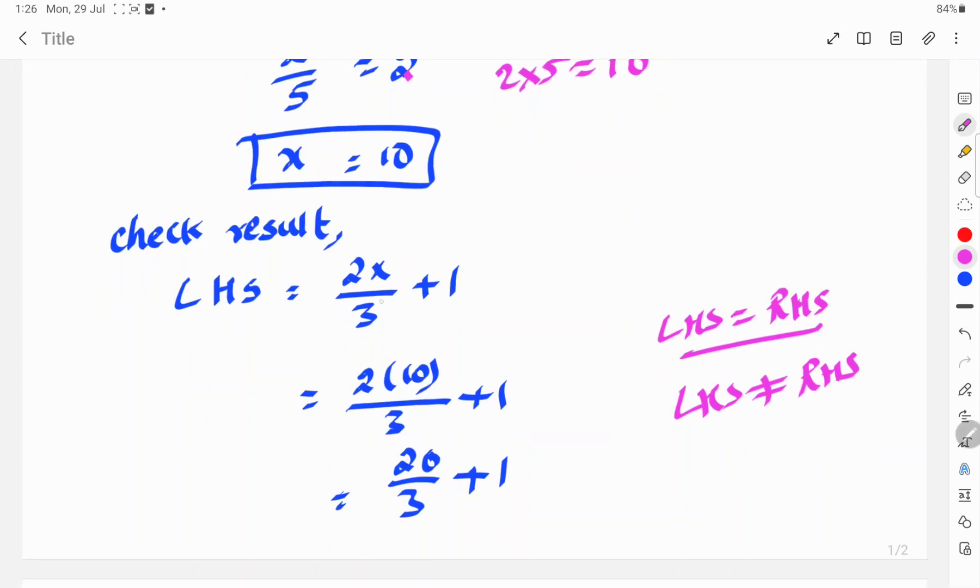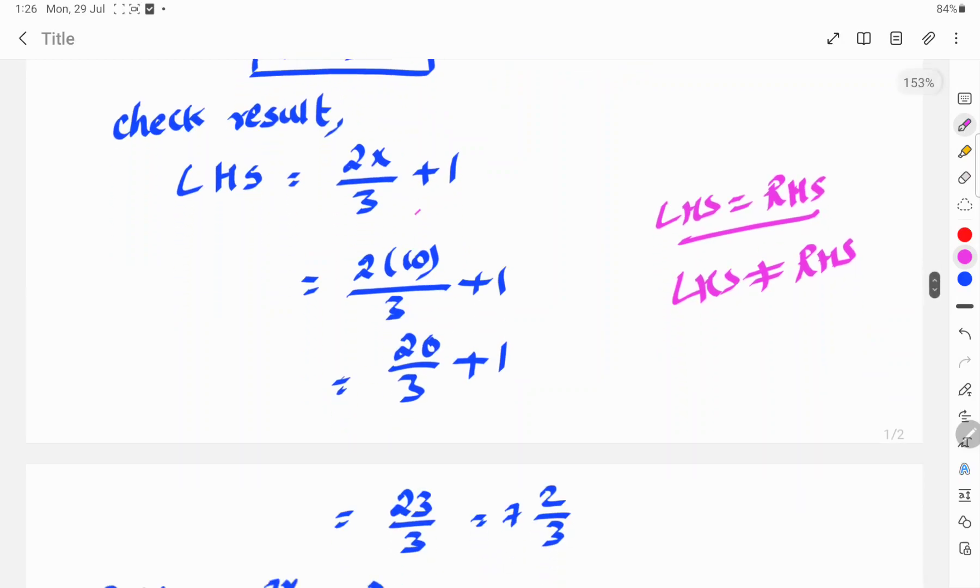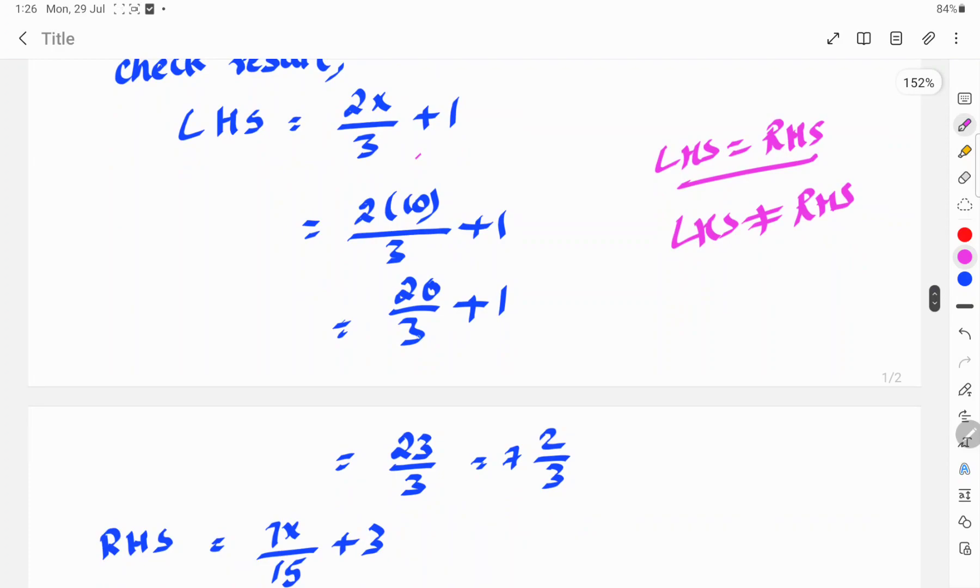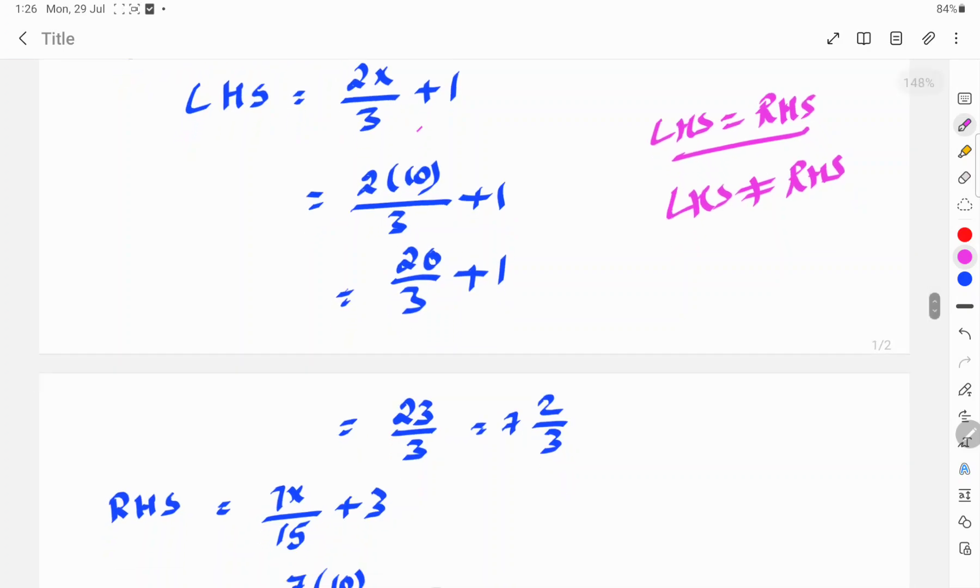LHS is equal to 2x by 3 plus 1. So, 2 into x value is 10. So, substitute 10: 2 times 10 by 3 plus 1. So, 20 by 3 plus 1. So, 23 by 3, that is 7 and 2 by 3.